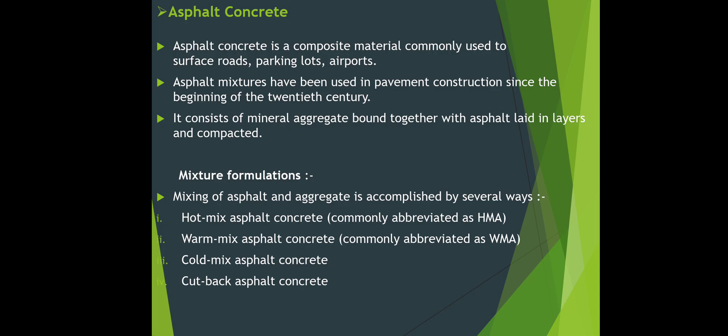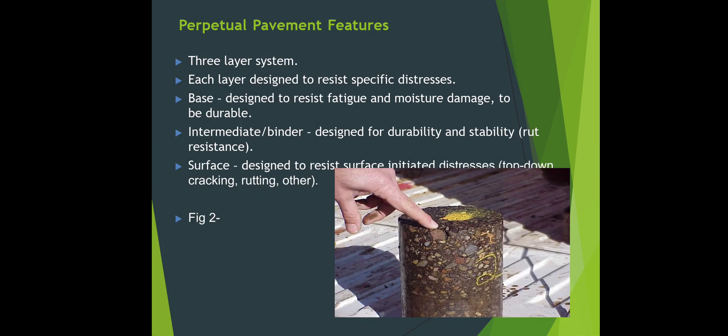Perpetual pavement features a three-layer system where each layer is designed to resist specific distress. The base is designed to resist fatigue and moisture damage to be durable. The intermediate binder is designed for durability, stability, and rut resistance. The surface is designed to resist surface distress, top-down cracking, rutting, and other factors. Figure two shows the three-layer system.